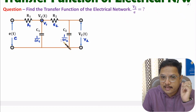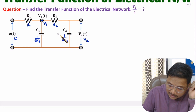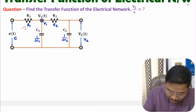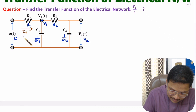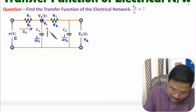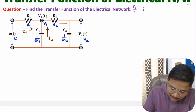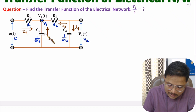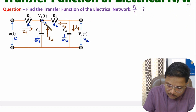Now, using these impedances we can identify the transfer function by applying KCL. To apply KCL, first we consider the direction of currents. In this branch current is I1, in this branch current is I2, in this branch current is I3, and in this branch current is I4. Now I'll apply KCL at node V1.